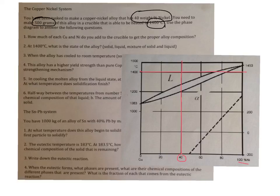So of course, since you have 500 grams, what you need is 40% of 500 is going to equal 200 grams of nickel. And then the remaining 300 grams is going to be copper. So that's the first question.